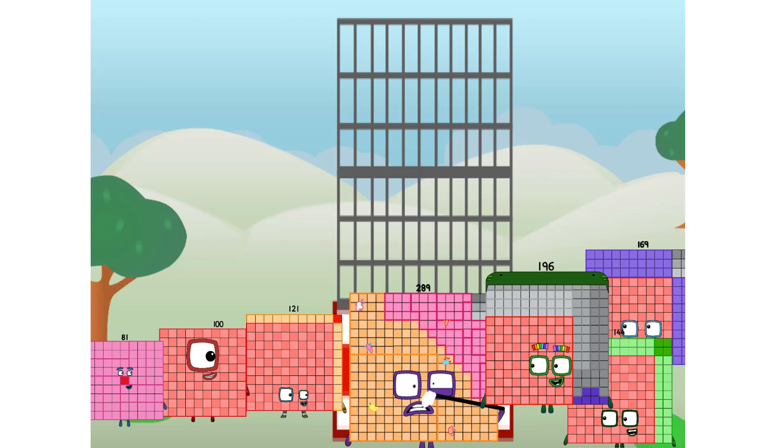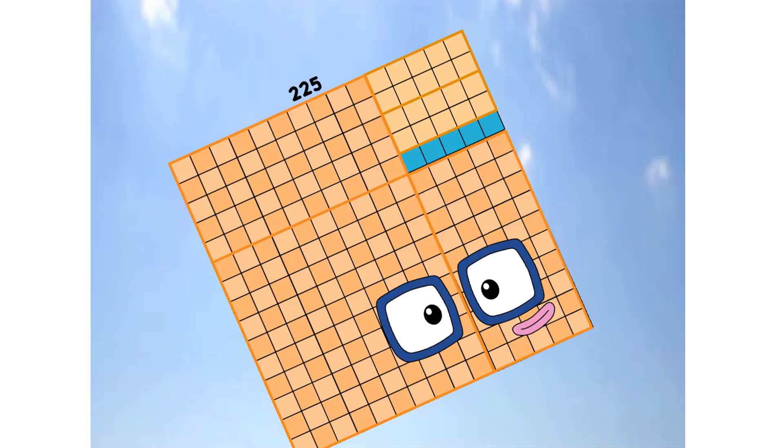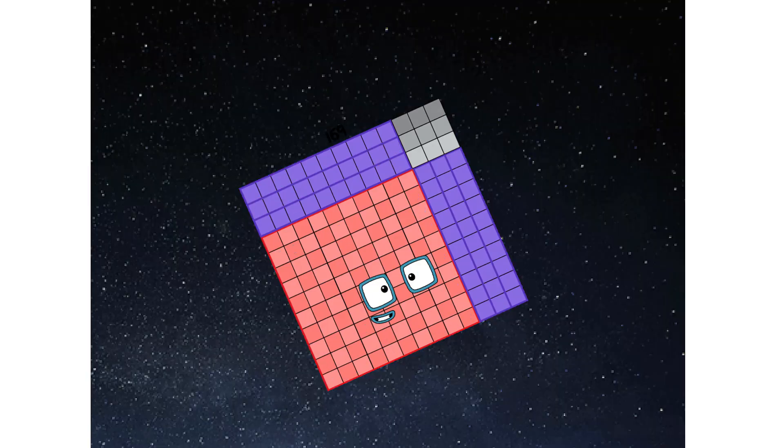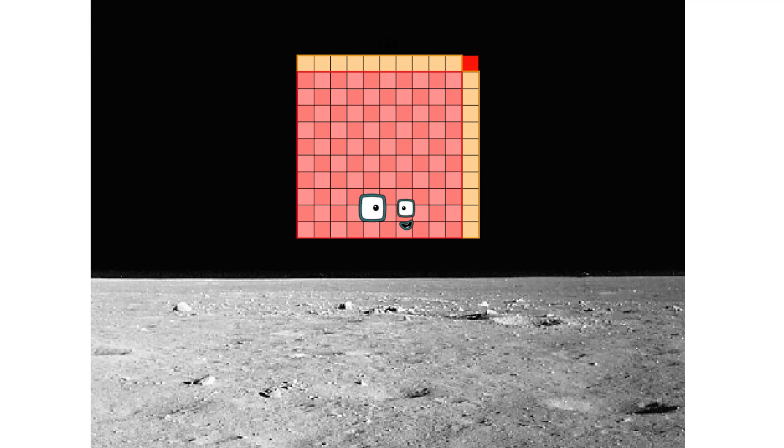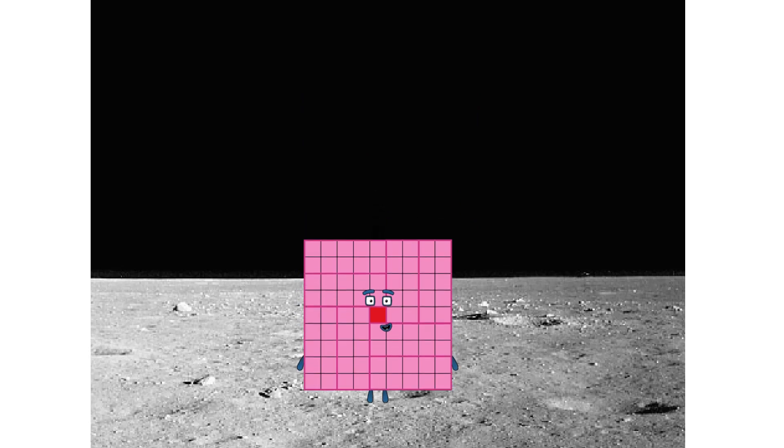Prepare for launch. We have liftoff. Primary launch stage completed. Engaging secondary stage. We've reached space. Second stage complete. Entering lunar orbit. Launching lunar lander. The square has landed.